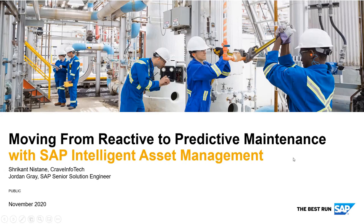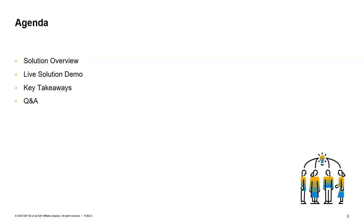Thanks for that intro, Shrikant. Quick overview of the topics we're covering today. We're focused on SAP Intelligent Asset Management. Intelligence comes in two forms — it's not just the devices themselves that are getting more intelligent, the processes around those devices also have to be intelligent. We'll cover a quick intro to the solution, predictive maintenance and service, hop into a live solution demo, then hand it over to Shrikant for key takeaways and next steps, and open it up for a brief Q&A.